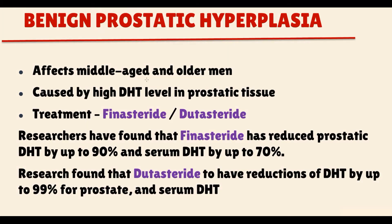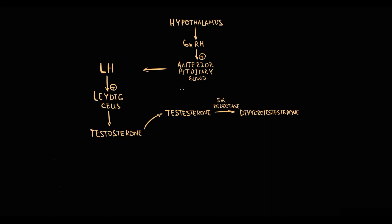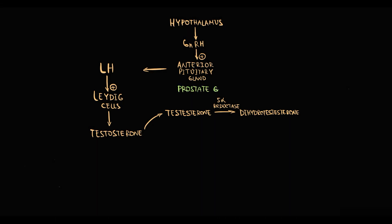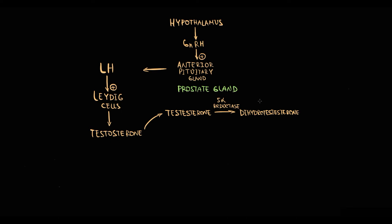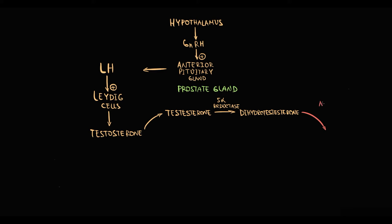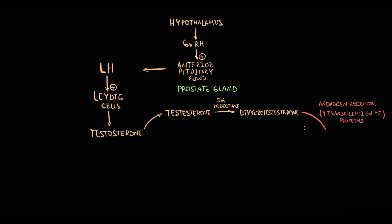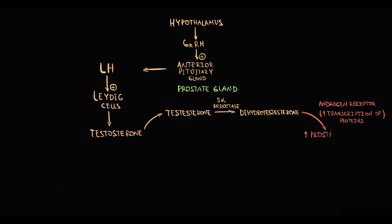Benign prostatic hyperplasia is a condition typically seen in middle-aged and older men, caused by high dihydrotestosterone levels in the prostate gland. When testosterone enters the prostate, 5-alpha reductase converts it into dihydrotestosterone, which binds to intracellular androgen receptors in prostate cells and causes increased transcription of proteins responsible for cellular proliferation. So in response, prostatic cells begin to proliferate.